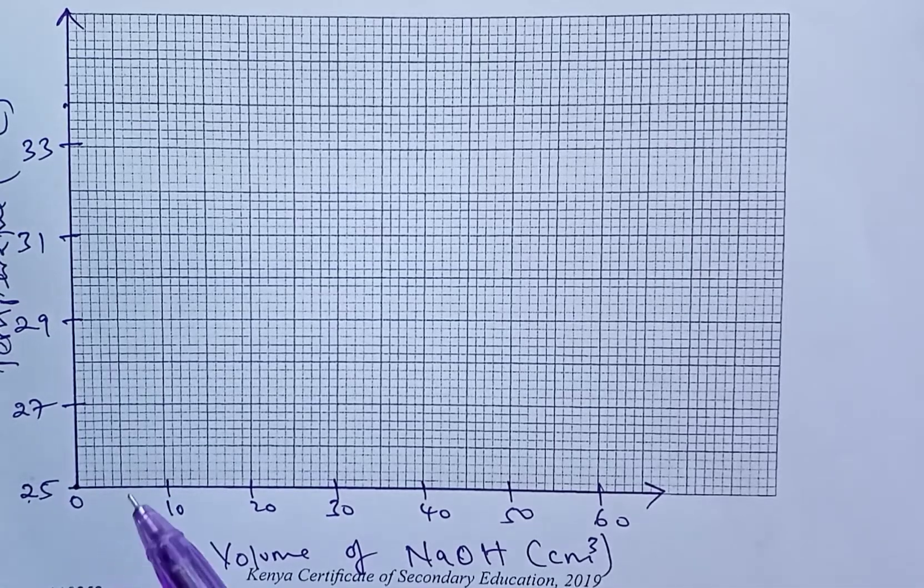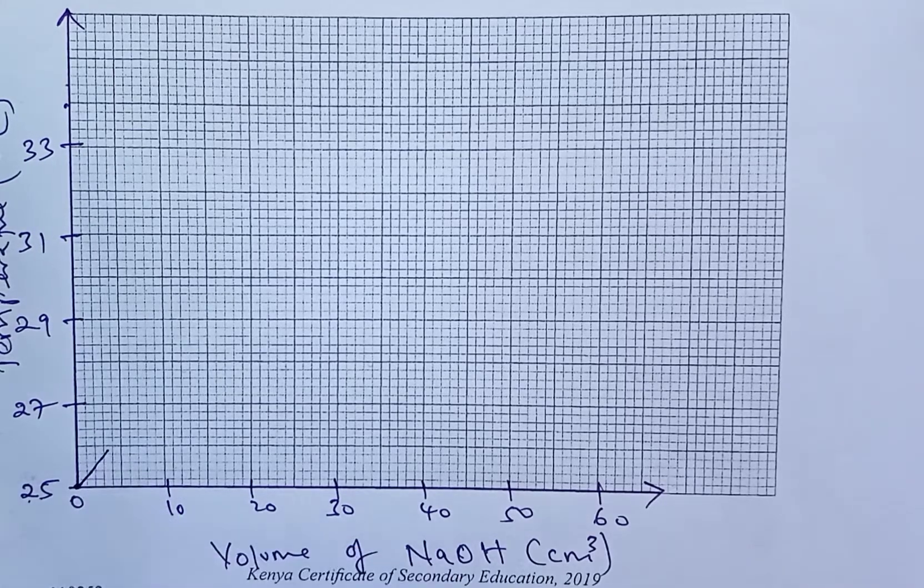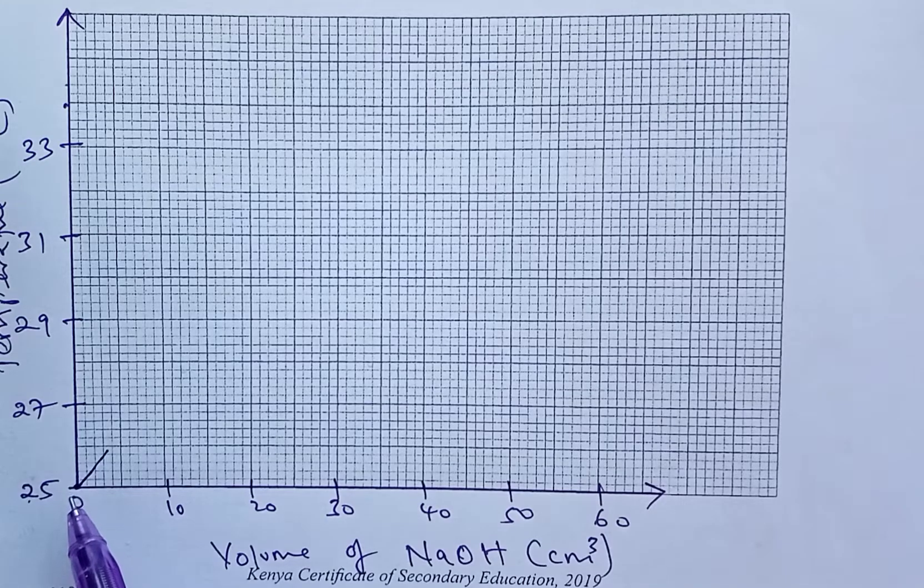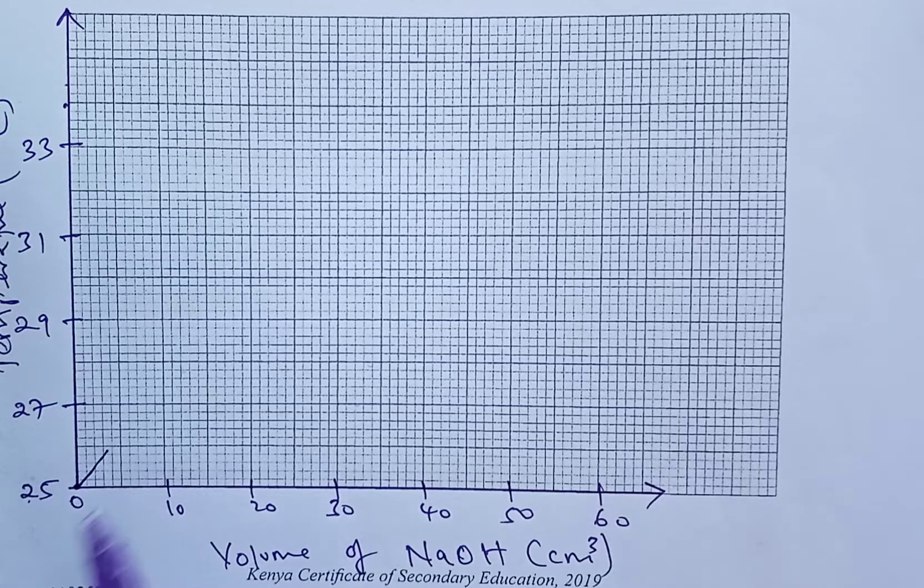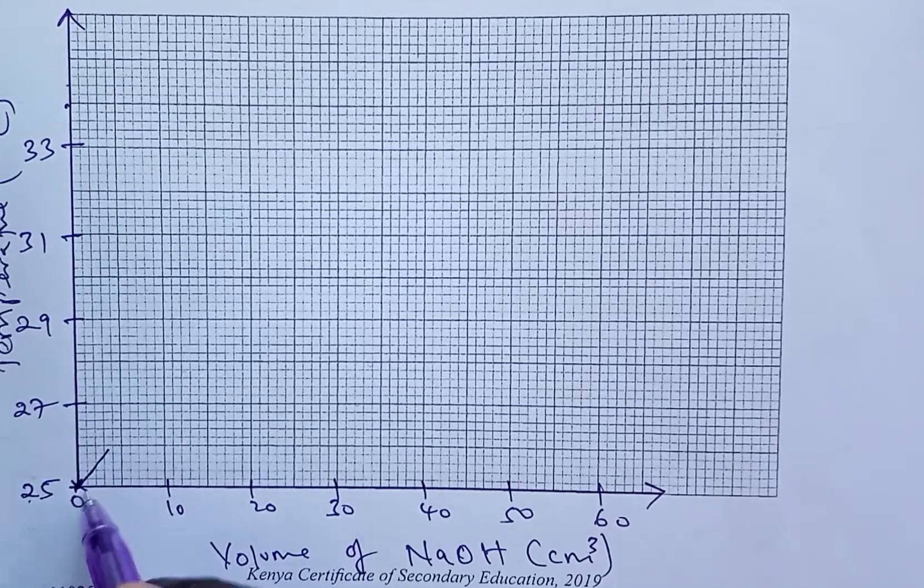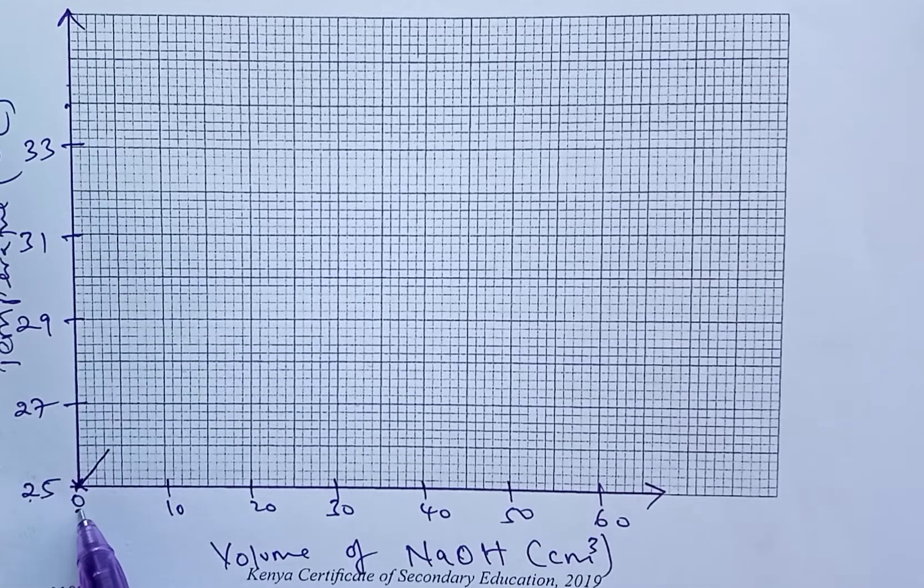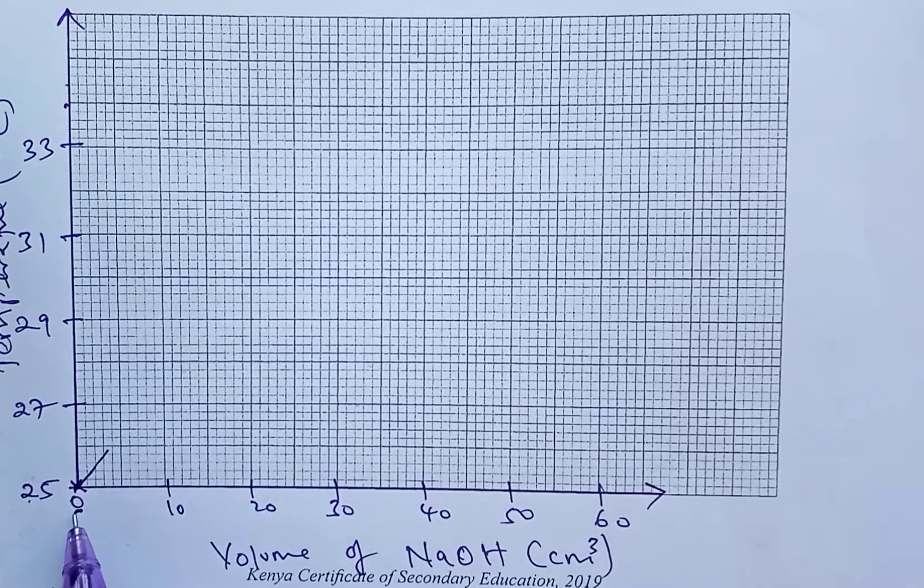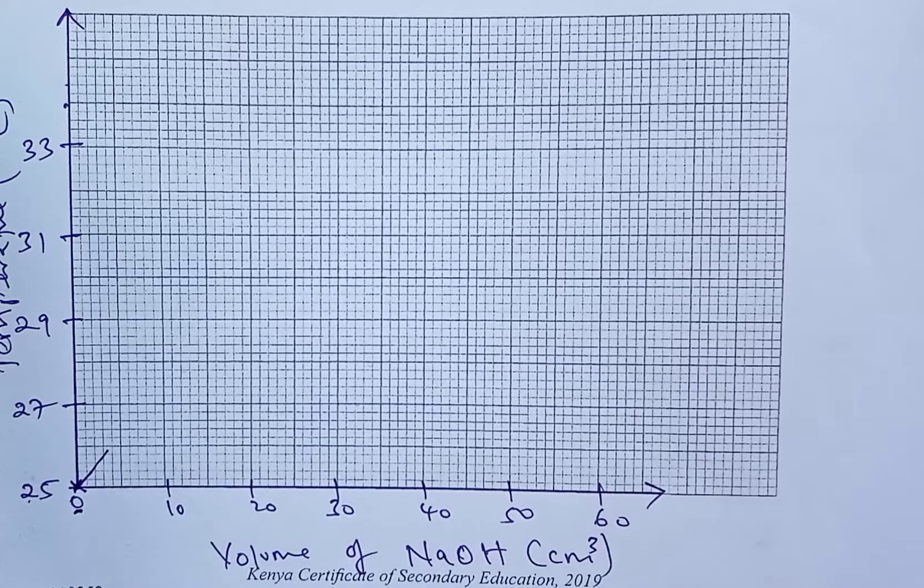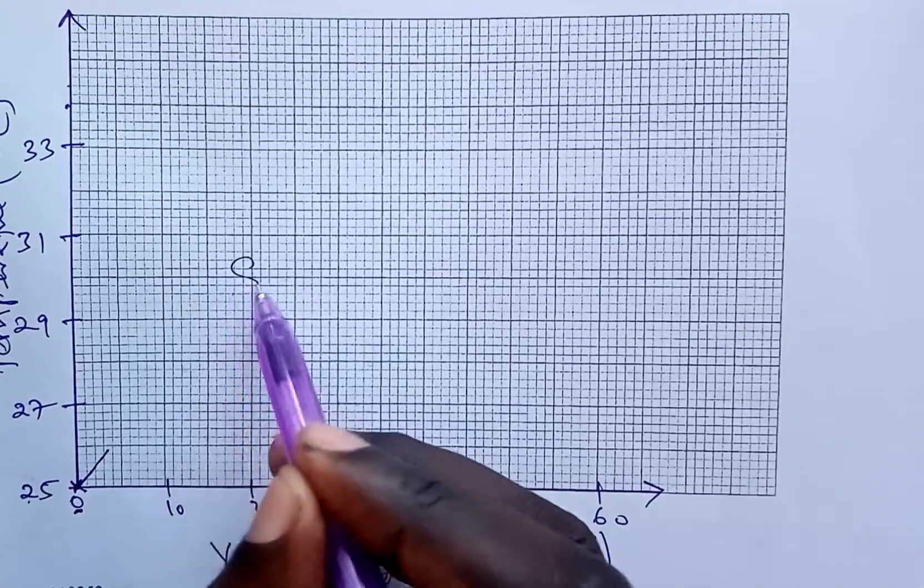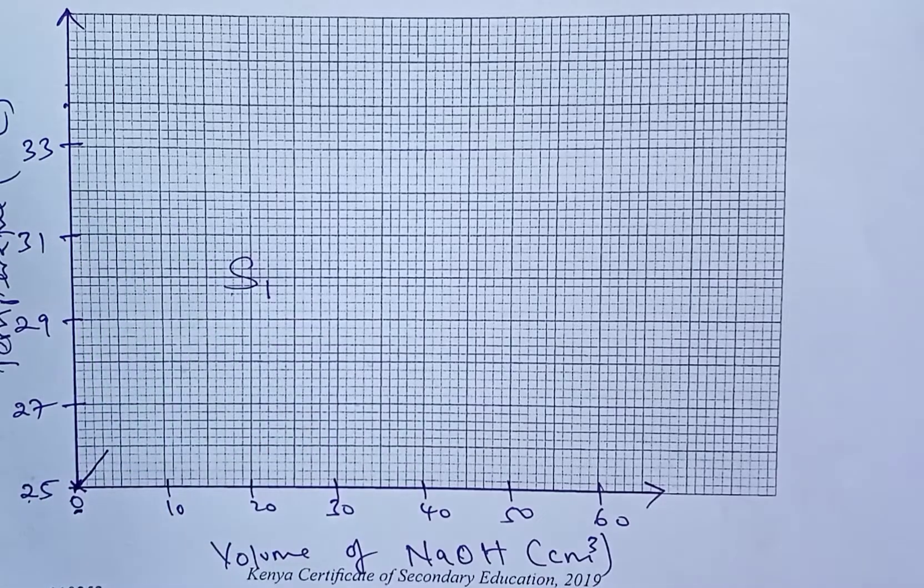Then, as you draw your graph, the line is going to pass through the origin. Because when volume of sodium hydroxide is zero, temperature is 25. So this is where your first plot is going to be. When you do it this way, where you put the first figures from the table at the origin, both of them at the origin, this is something that is allowable in chemistry. So this student is going to get the full marks for scale. A half for the x and a half for the y.